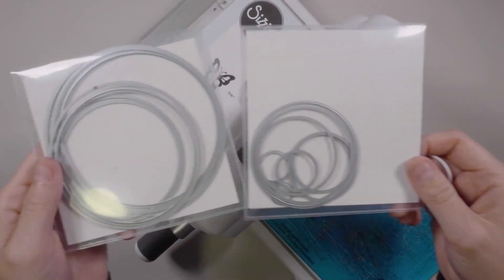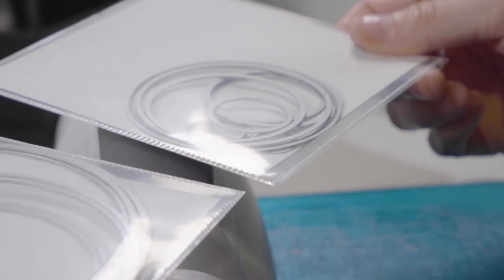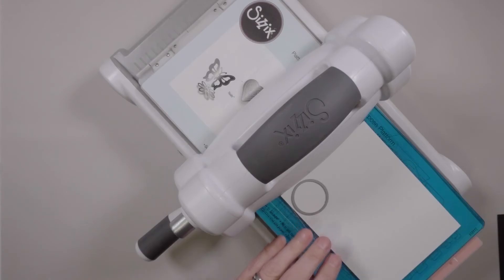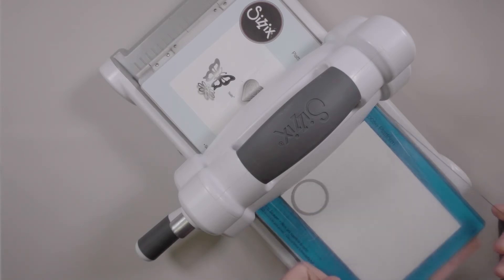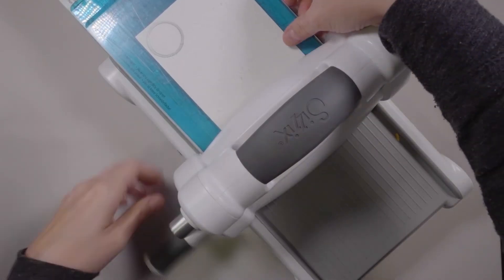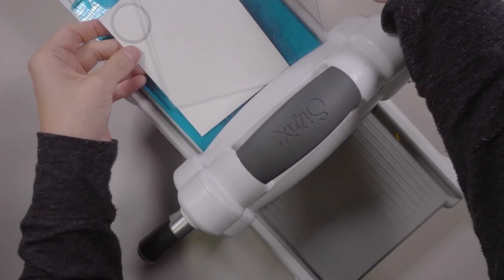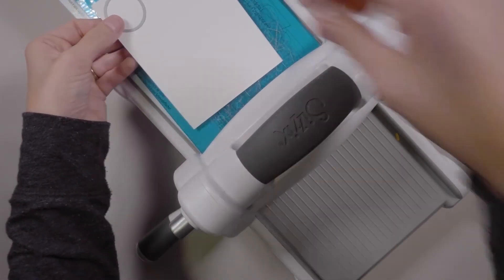I'm using Hero Arts Infinity nesting dies again. These circle ones I keep in two separate packages, small and large, so that it's super quick and easy to find the exact size that I'm looking for. I've chosen a small one and I am using some Neenah Solar White 80 pound cardstock to cut out two Reese's.